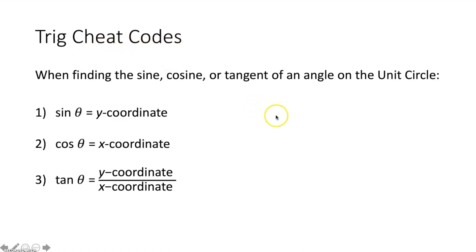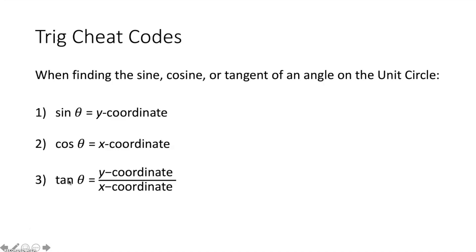Now let's quickly review the trig cheat codes. If you had an angle whose measure was a multiple of 30 degrees or 45 degrees, you could use the unit circle to evaluate the sine, cosine, and tangent of that angle. The sine of that angle equals the y-coordinate of the corresponding point on the unit circle. The cosine equals the x-coordinate. The tangent equals the y-coordinate over the x-coordinate of that point. Last time we only evaluated with degree measures, but today we'll see it works the exact same way when measures are given in radians.